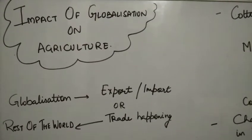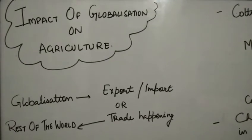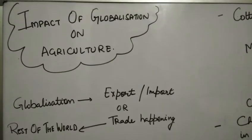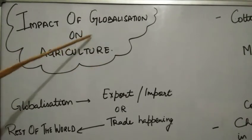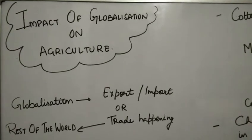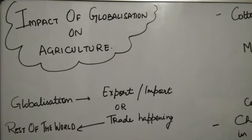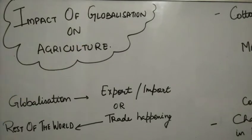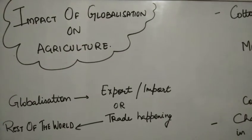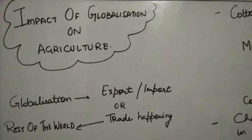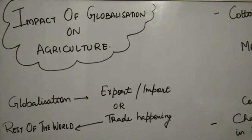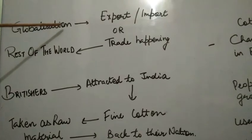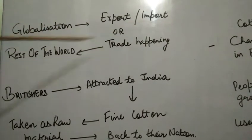Now let's see the impact of globalization on agriculture. Globalization means trade happening with different parts of the world — exports and imports of various commodities. In 1991, the LPG policy — Liberalization, Globalization, and Privatization — was introduced in India. Globalization means you can now open trade with different parts of the world with no restriction. We will see what the situation was before globalization and what impact came after globalization.